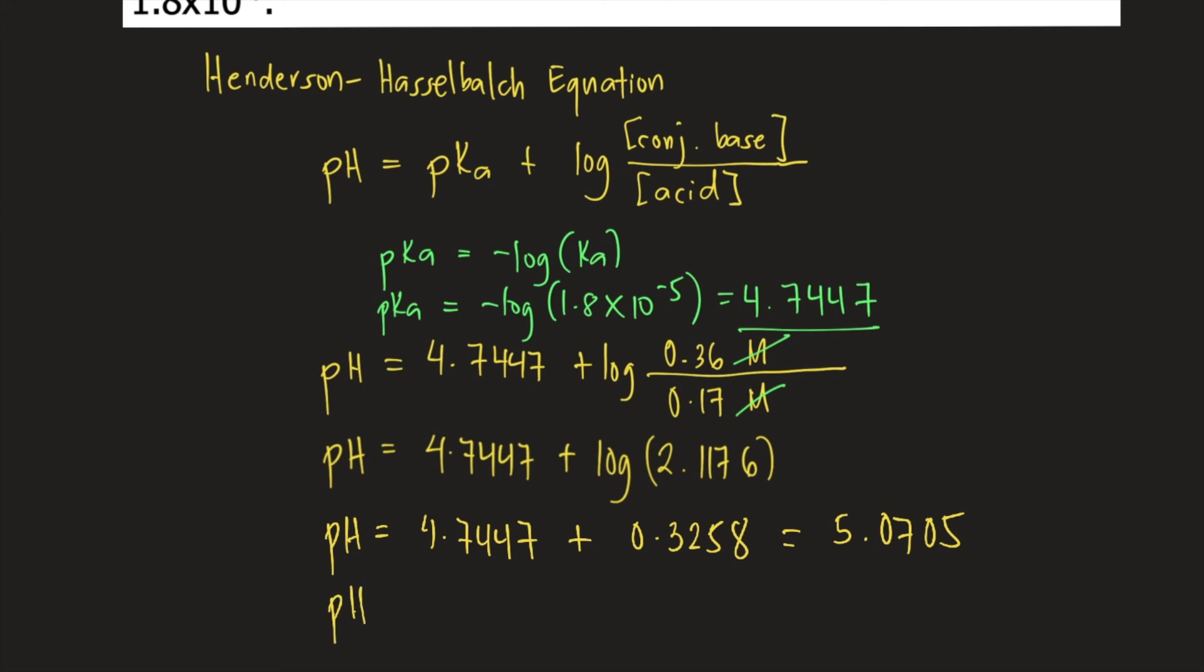Or approximately 5.07. So the pH of the buffer solution is 5.07.